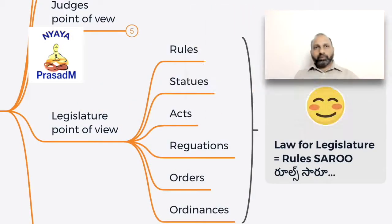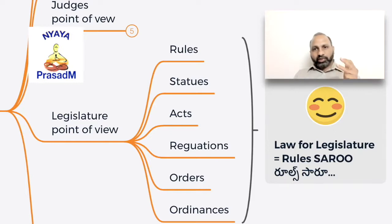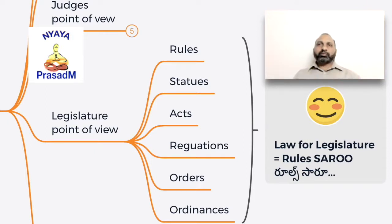To remember all these different words, we have one more mnemonic. Law for legislature is 'Rules SAROO.' SAROO is a typical Telugu word which anyone can remember. The spelling is S-A-R-O-O. So: Rules is the first one, then S for Statutes, A for Acts, R for Regulations, O for Orders, and O for Ordinances. For a legislature, the definition of law is around these specific areas.